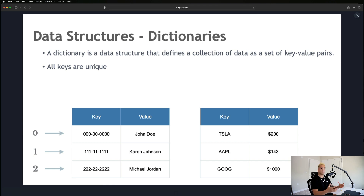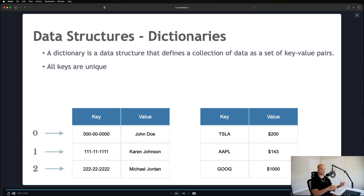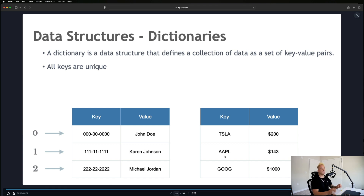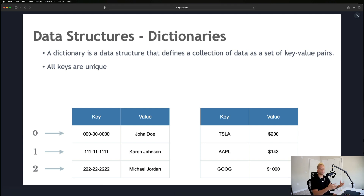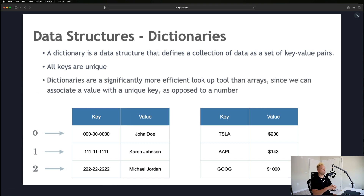All keys in dictionaries have to be unique. Things would get messy if two people had the same social security number — you wouldn't be able to tell who's who. Same with stocks: you can't have duplicate ticker symbols. Dictionaries are also a significantly more efficient lookup tool than arrays, since we can associate a value with a unique key as opposed to finding something by a random index.